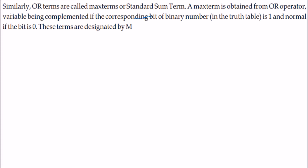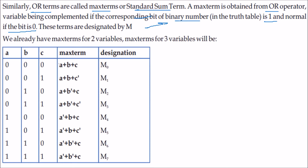Similarly, we have OR terms, called maxterms, also known as standard sum terms. The maxterm is obtained by ORing the variables. If the corresponding bit of the binary number is 1, the variable is complemented; if the bit is 0, the variable is taken normally. These terms are designated by capital M.